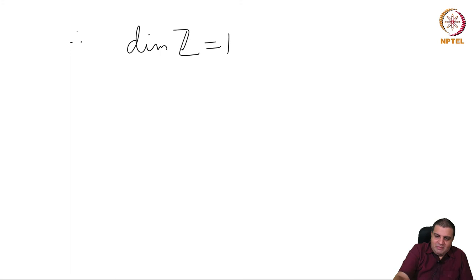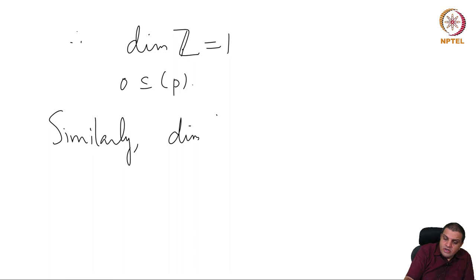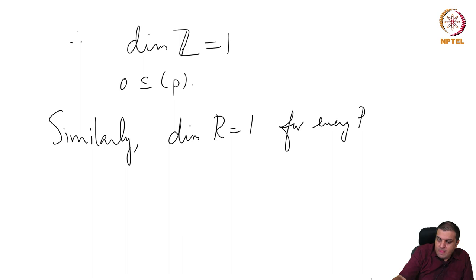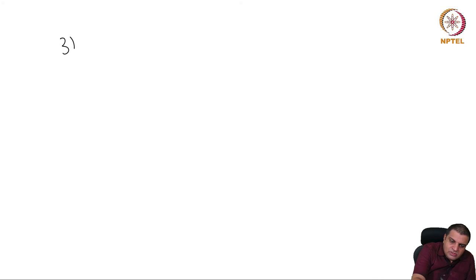Dimension of Z is 1 — meaning this chain 0 ⊂ (p) is always present and you cannot insert more elements or extend it further. Similarly, dimension of R equals 1 for every PID, by the same argument: maximal ideals are generated by irreducibles, and the only prime ideals are either maximal or the zero ideal, so any chain looks like this.